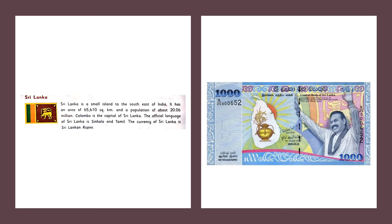So to recap: Sri Lanka is a small island to the south east of India, with an area of approximately 65,610 square kilometers and a population of about 20.6 million. The official languages are Sinhala and Tamil, and the currency is the Sri Lankan Rupee.